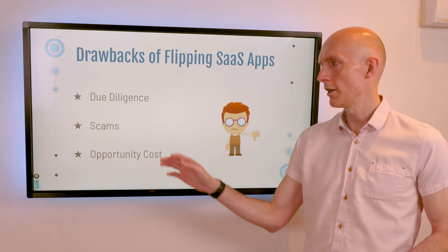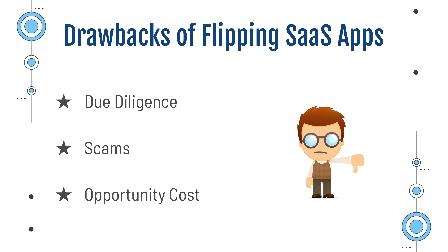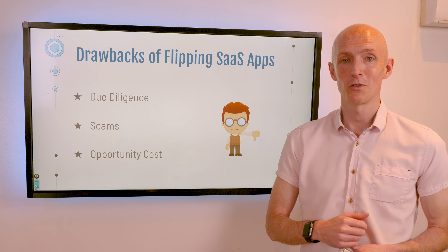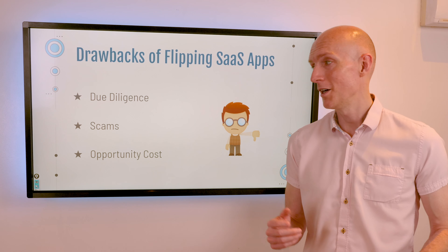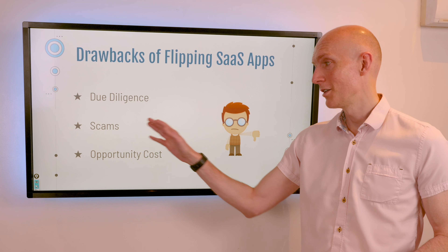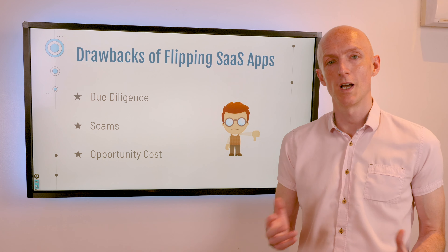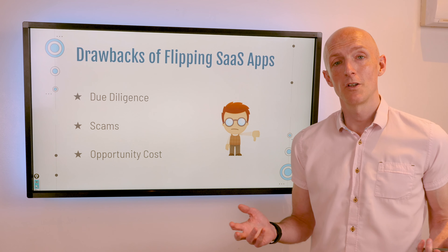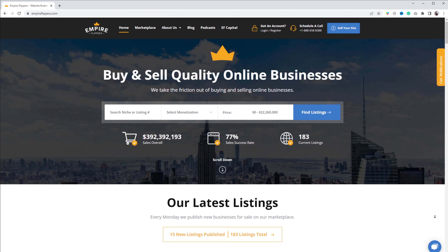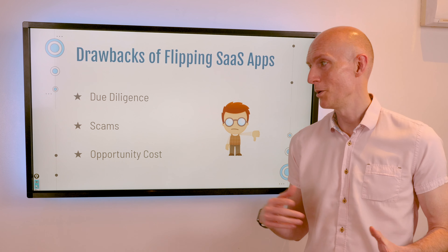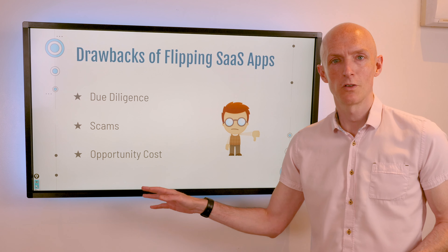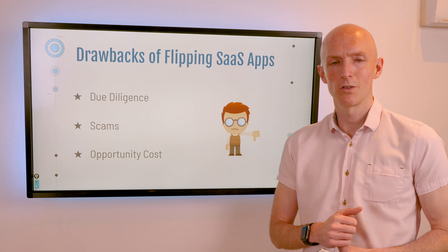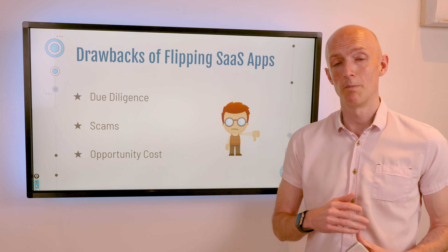The drawbacks of flipping SaaS apps: number one, due diligence. Unfortunately, a lot of businesses sold on these marketplaces are being sold for a reason the seller doesn't want to disclose. It's your job to dig deep into the financials and the business itself to discover the genuine reason for the sale, which can be time consuming. Secondly, scams — where there are large sums of money changing hands, there will always be scammers. I'd recommend going through a managed service like Empire Flippers until you've been around the block enough times. Finally, opportunity costs — this side hustle requires initial financial investment and time, and it's possible your time and money could have given a better ROI elsewhere.